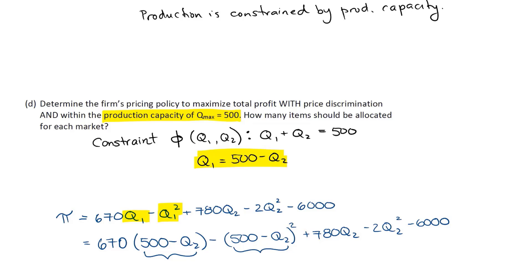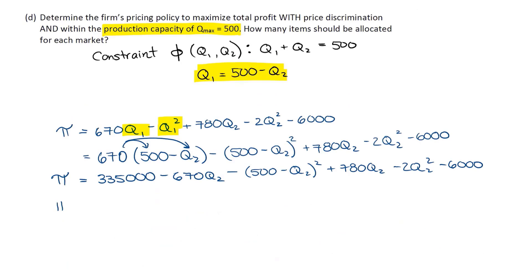But before doing that, I'm just going to make this equation a little bit easier to read by foiling this out. I'm going to simplify this equation. So 670 times 500 gives me 335,000 minus 670Q2 minus, I'm going to leave this as 500 minus Q2 all squared, plus 780Q2 minus 2Q2 squared minus 6,000. Now I'm going to collect my like terms.